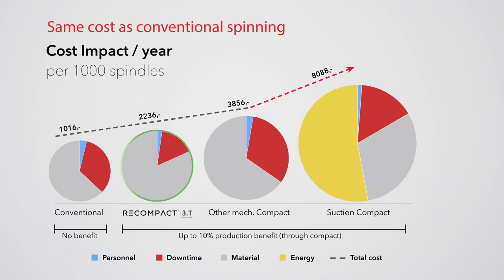Here you can see the overall cost impact of different spinning methods. Recompact performs the best and gives you a clear price advantage over other mechanical compact and suction compact at the lowest price, and also with the lowest waste of resources and significantly less downtime.